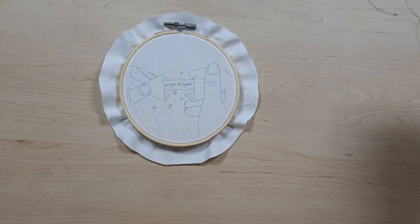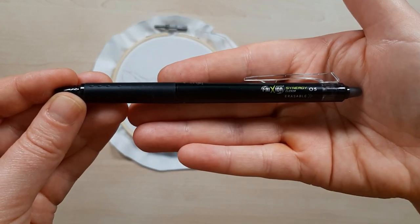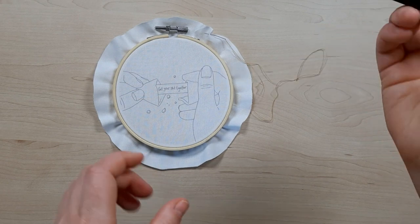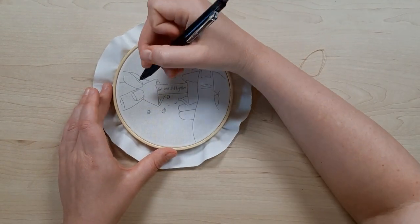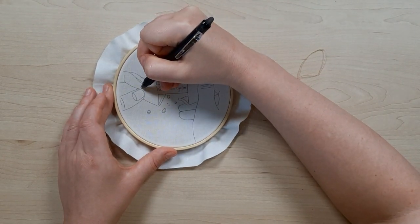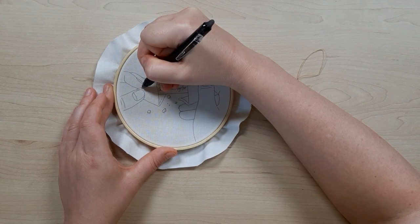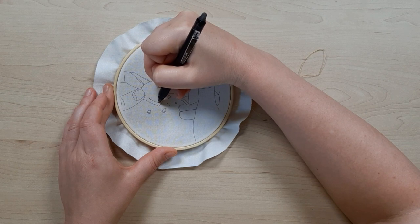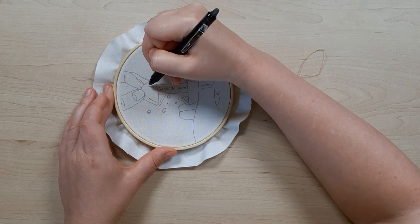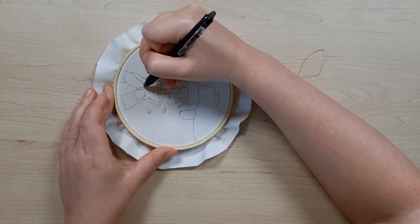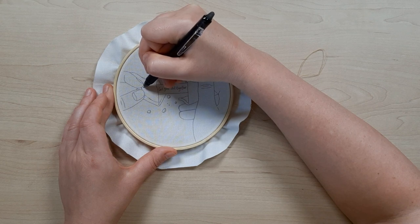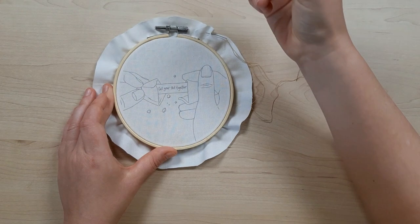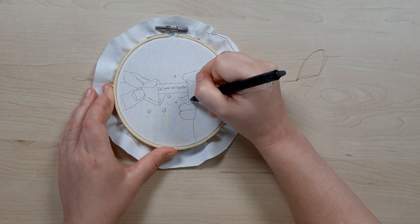Next, I have to decide where I want each color to be. I'm going to use a Frixion heat erasable pen to give myself an idea of where I want each color section to be. These pens are great for thread painting. The lines can be removed with a hairdryer, or you can use a water-soluble pen if you aren't a fan of the heat erasable. I know sometimes they get a bad rep because their lines can reappear in cold temperatures, but as long as you aren't putting your embroidery in the freezer, it's generally not a problem.